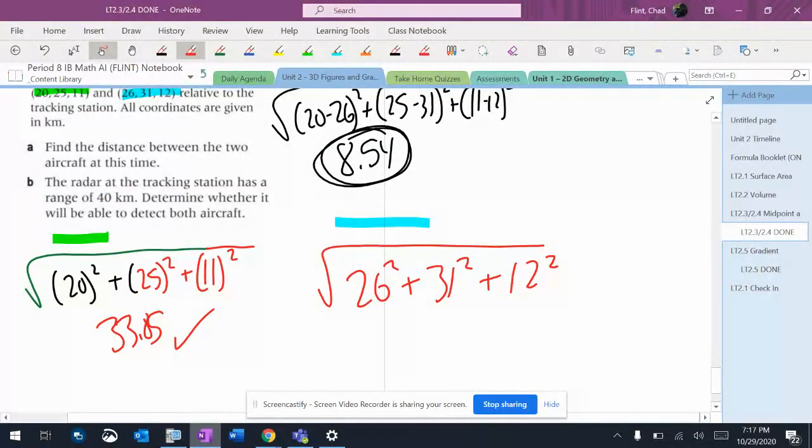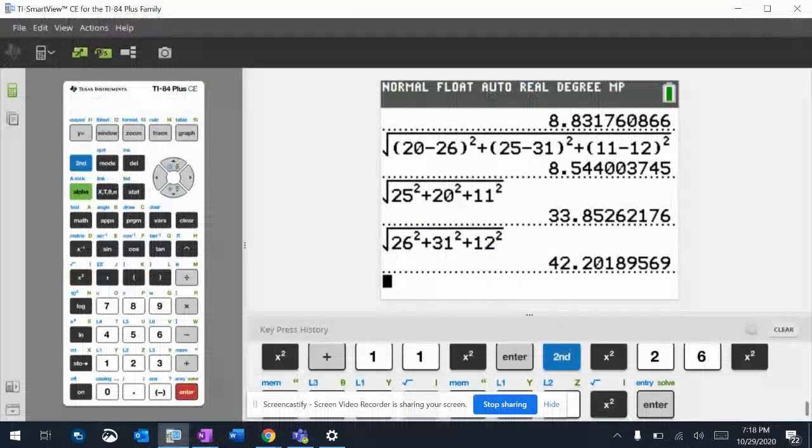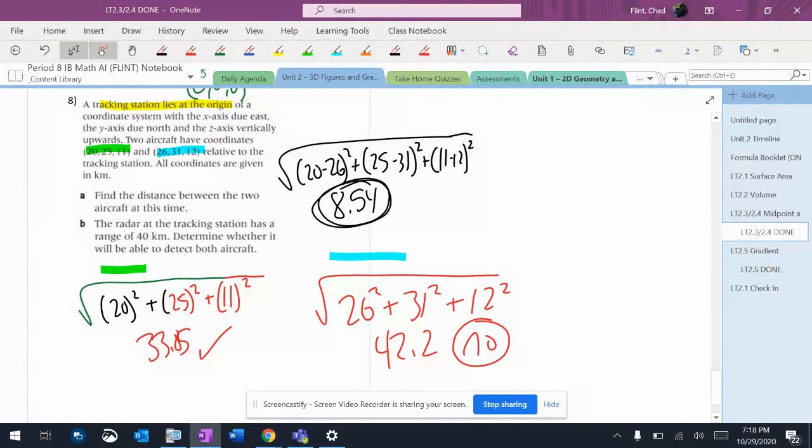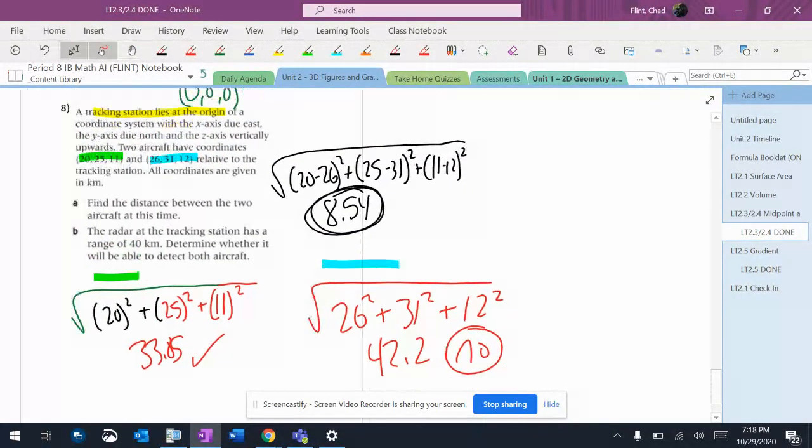Let's make sure I got the right numbers. Yes. It's going to be 42.2. So that one's a no. So the radar station would not actually be able to see these two planes. You can see the first one, but not the second one.